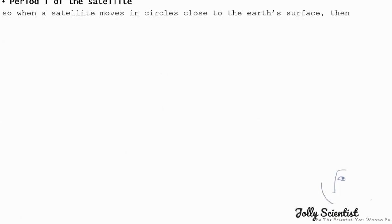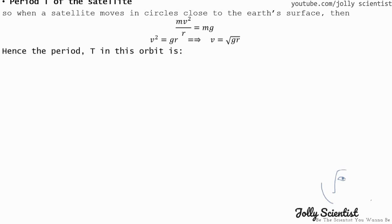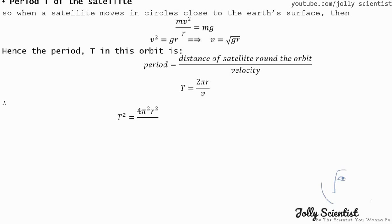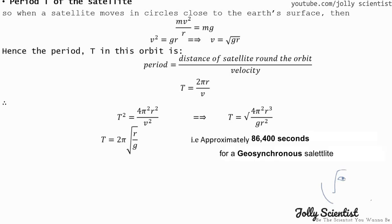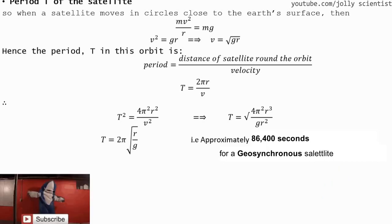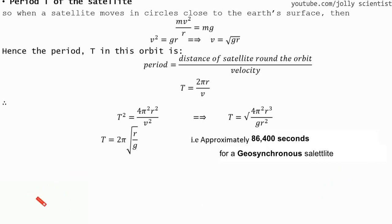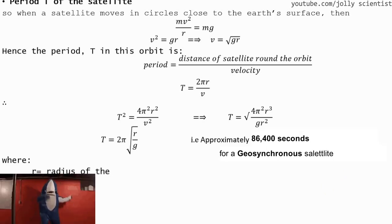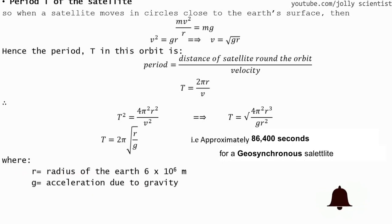When a satellite moves in a circle close to the Earth's surface, MV² divided by R equals Mg (the centripetal force). Making V the subject gives V equals the square root of g times R. The period T equals the orbital distance divided by velocity, so T² equals 4π² times R² divided by V², and T equals 2π times the square root of R divided by g, where R is the radius of the Earth and g is the acceleration due to gravity.